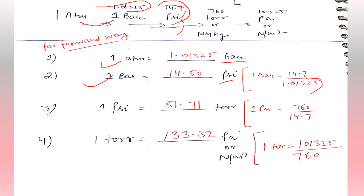In the next example, converting 1 psi into torr. We know that for torr the value is 760 and for psi the value is 14.7. Simply divide 760 by 14.7, and we get 1 psi equals 51.71 torr.